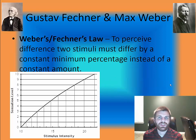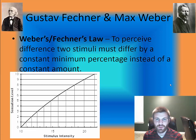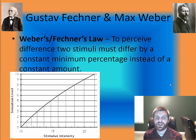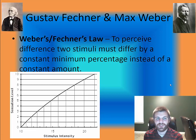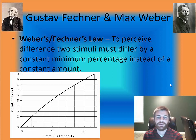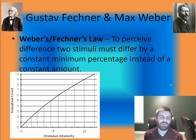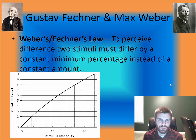To this day, we fall back on Weber's and Fechner's Law. These early pioneers in sensation and perception research established that stimulus intensity determines detection. To perceive a difference, two stimuli must differ by a constant minimum percentage, not just a constant amount. The more intense a stimulus is by percentage, the greater the likelihood we will detect it.